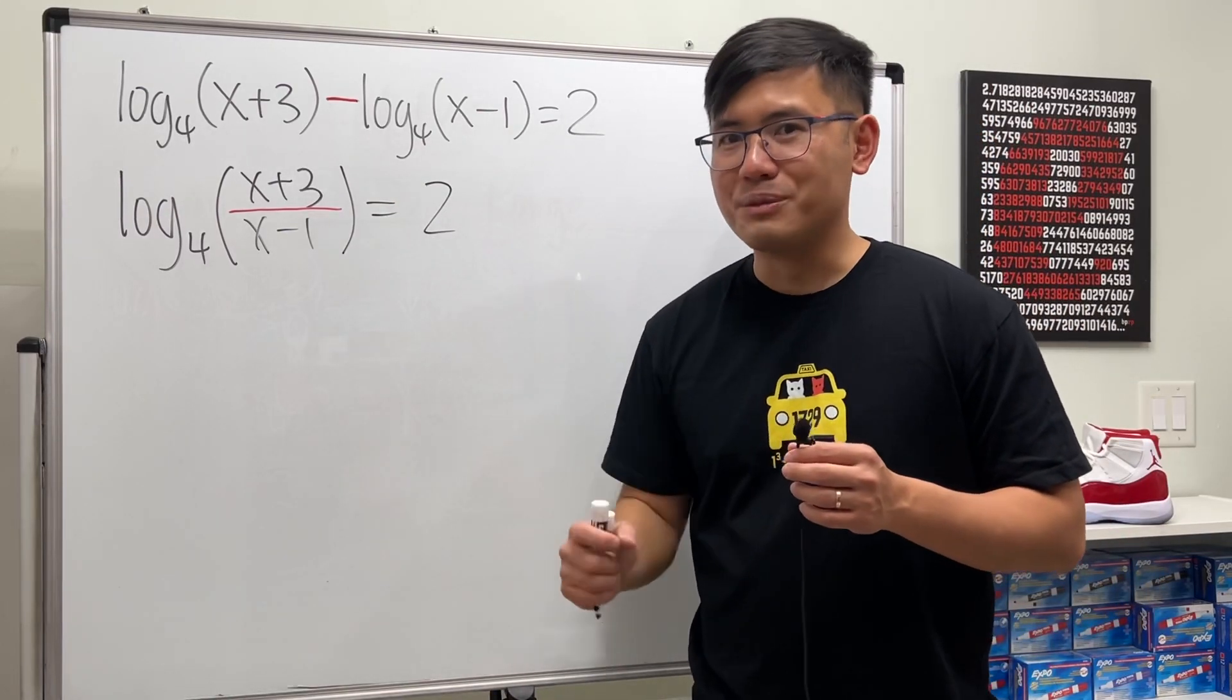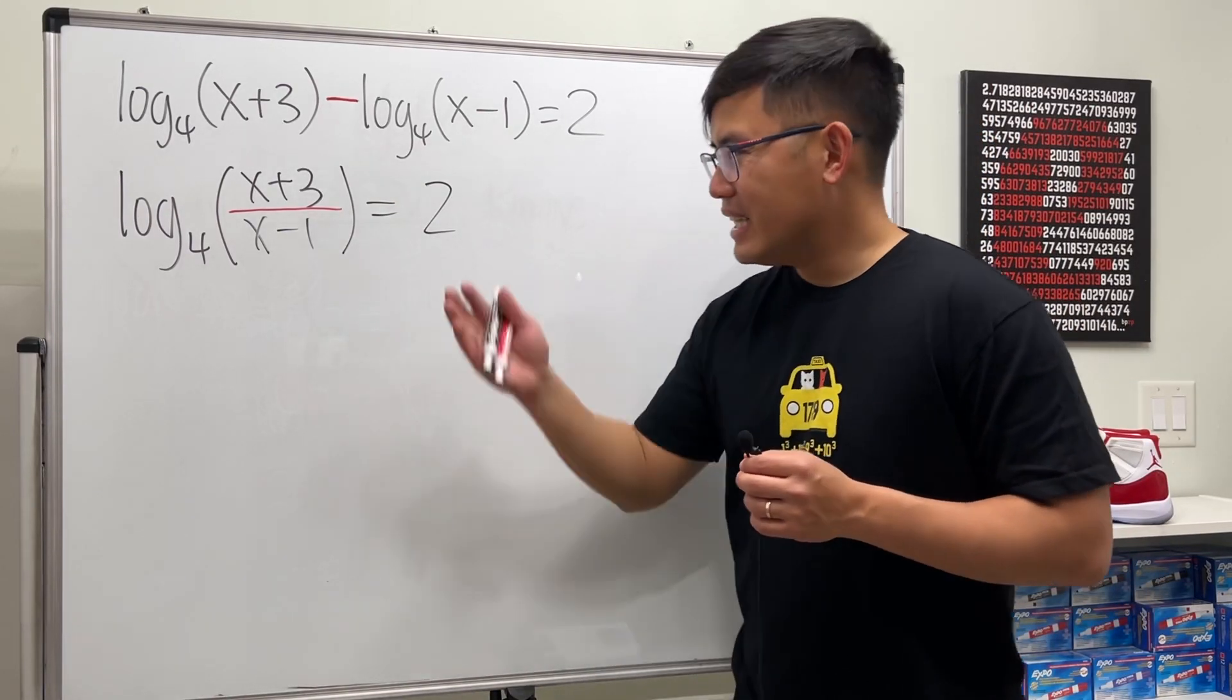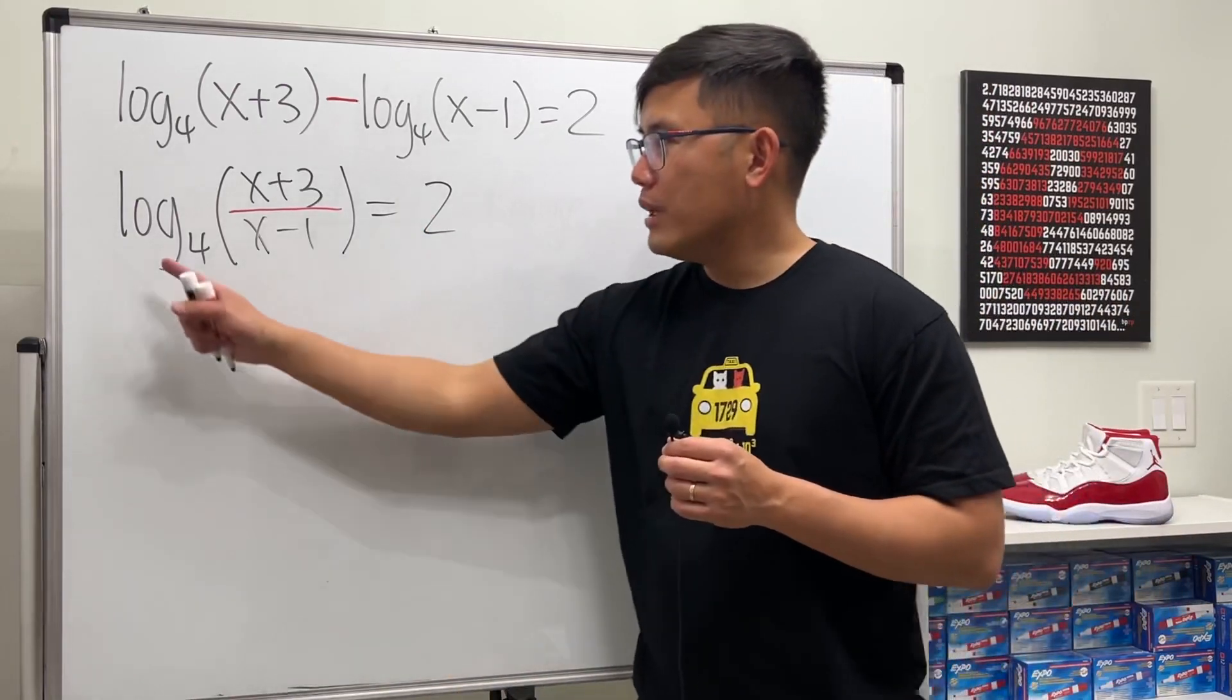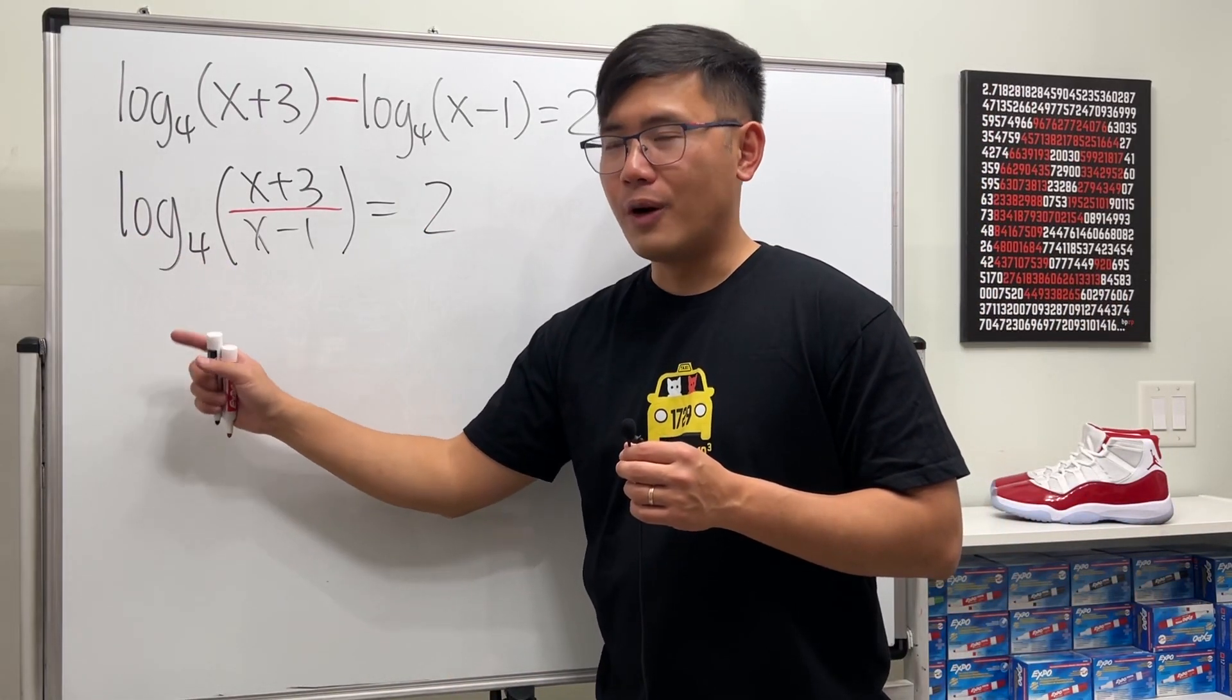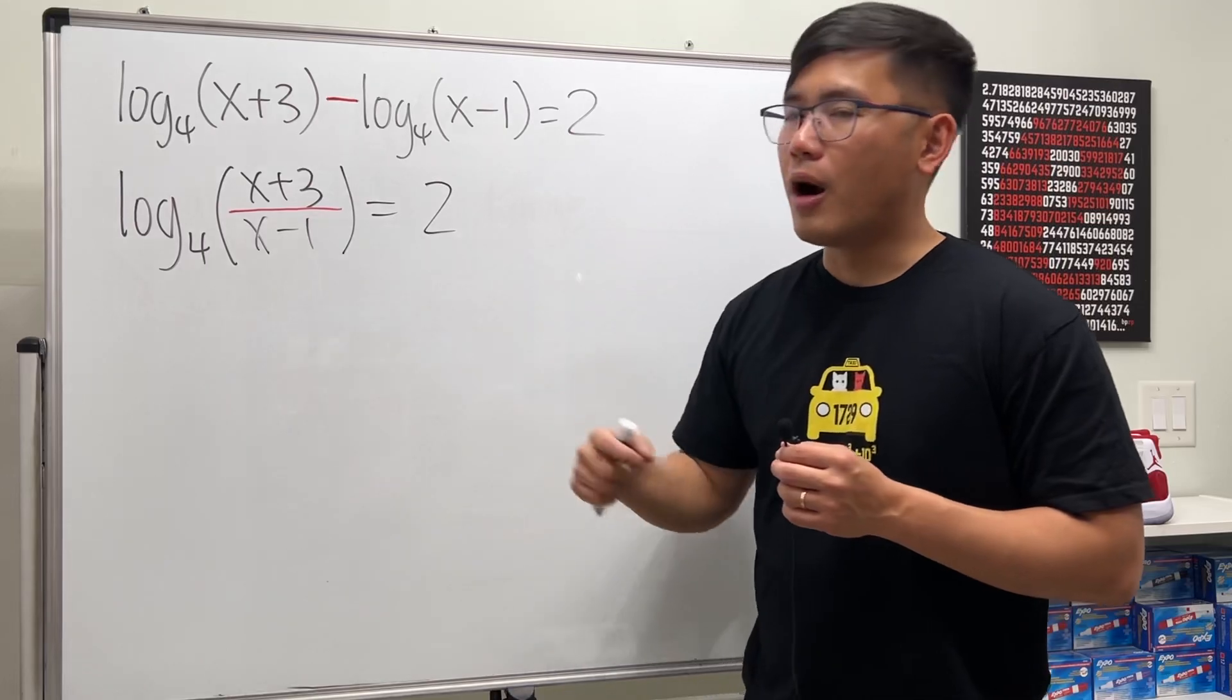So combine the logarithms first before we proceed. Next, we're going to get rid of the log. To do so, we're going to pretend they are exponents.